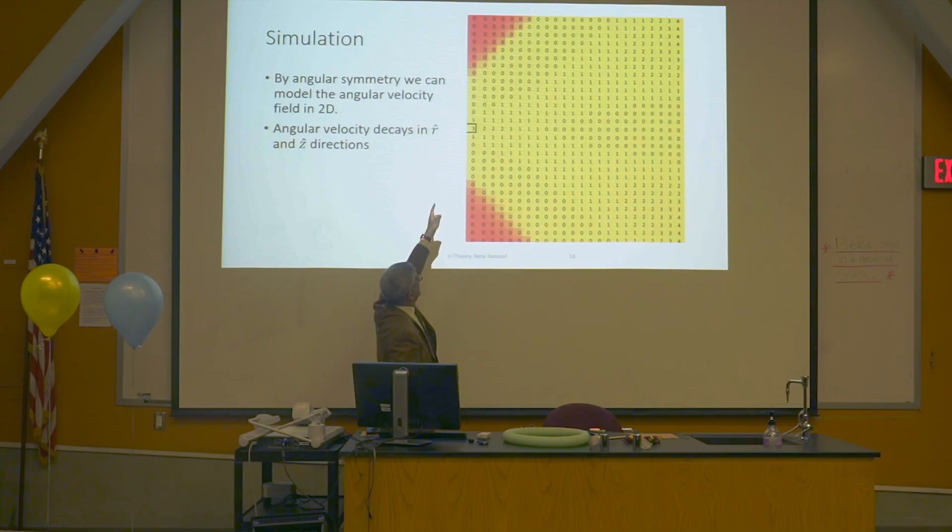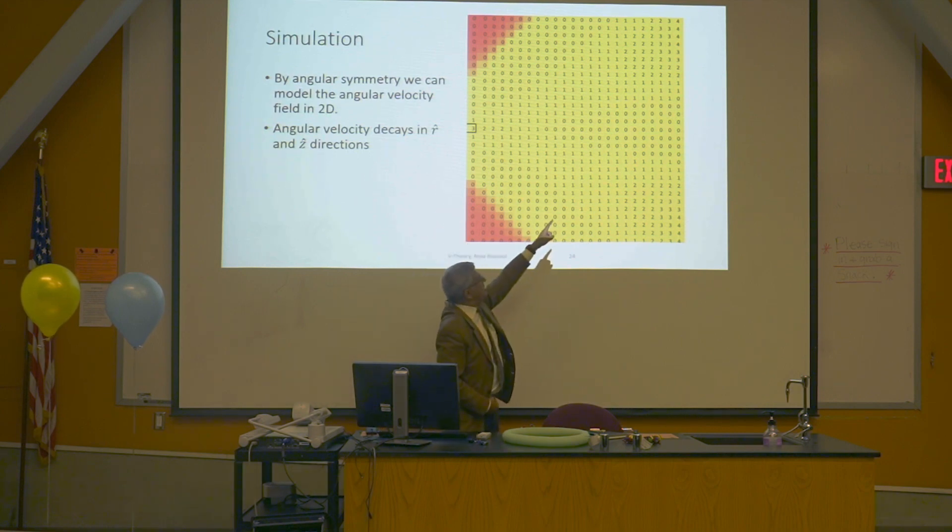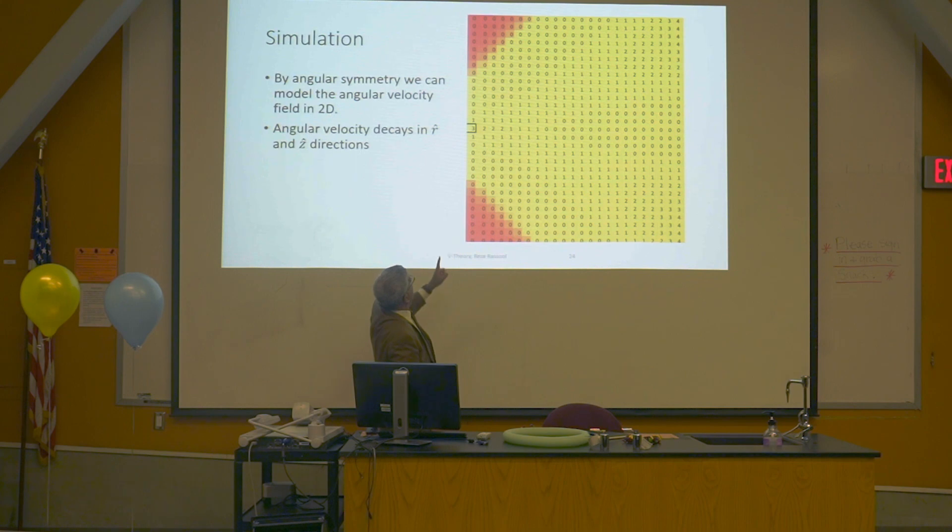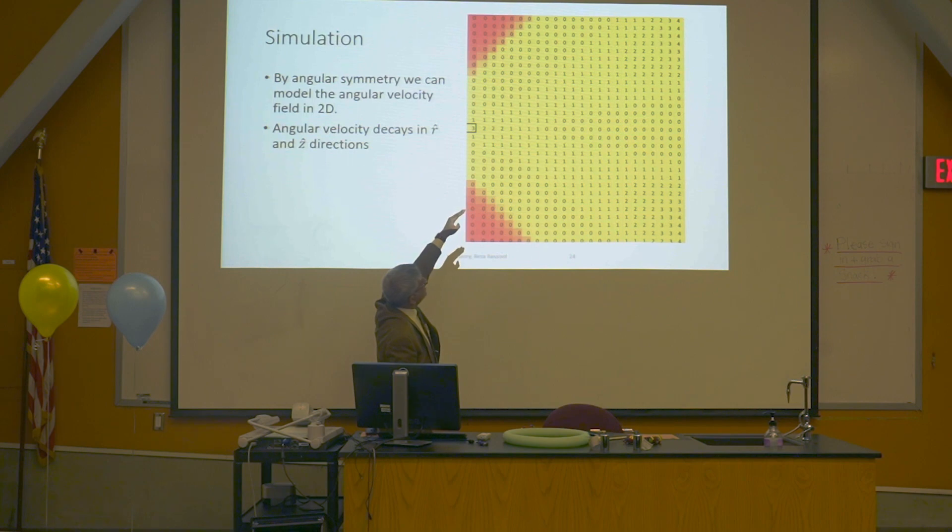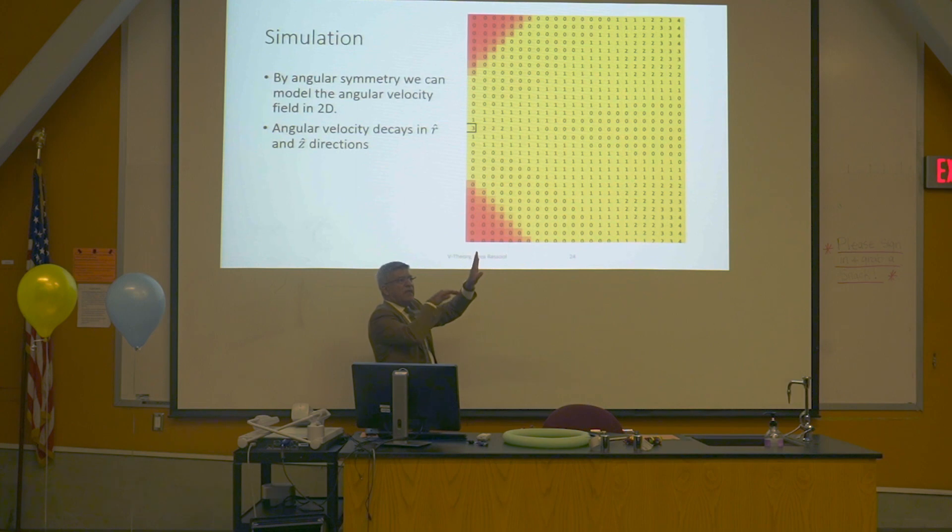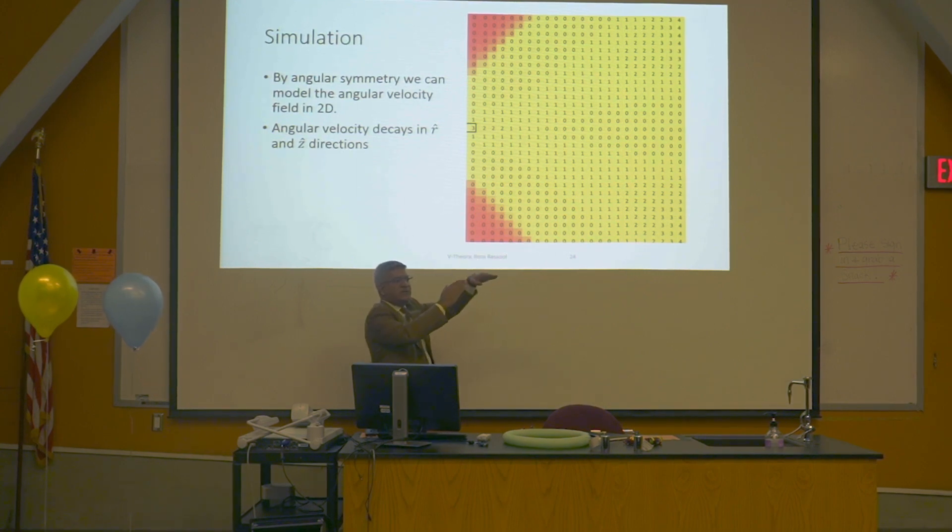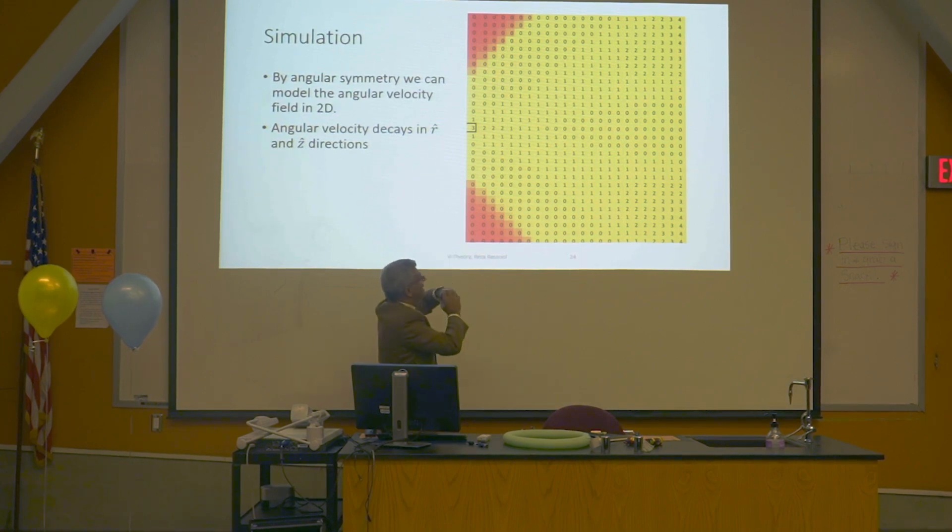Now, what do we see? Radially out from the elemental volume, the angular velocity is dropping to zero. Going up, it quickly drops to zero in the z-direction. However, along the diagonal, it's not dropping away. It seems like you're getting the contribution from the radial direction and in the z-direction. And they're building up faster than it's decaying.